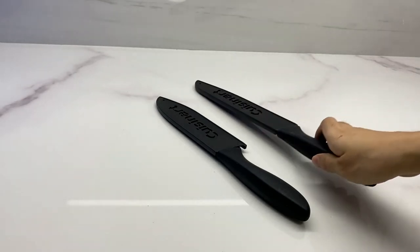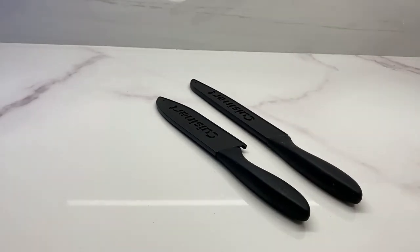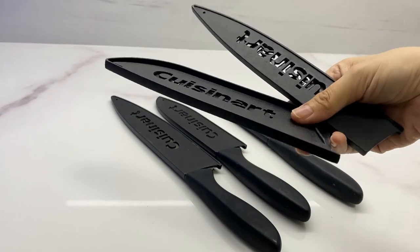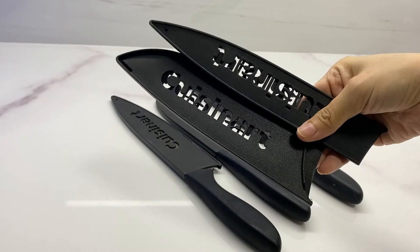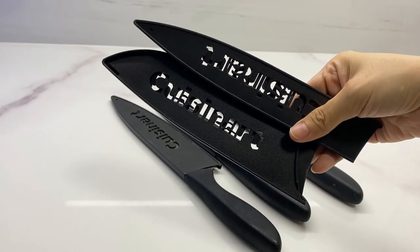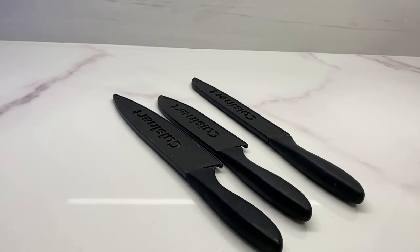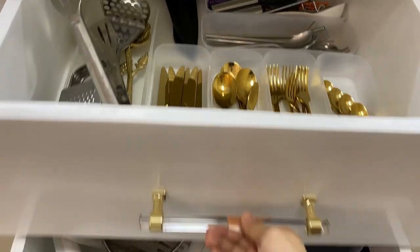Lastly, for knives, they're usually placed on a knife block. However, I decided to get knives with knife guards like these so I can put them safely in a drawer instead of the counter. I didn't find it necessary to buy a container for these since I can just place them on the drawer liner itself.